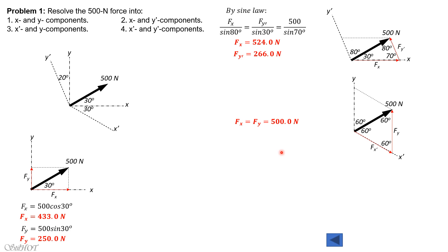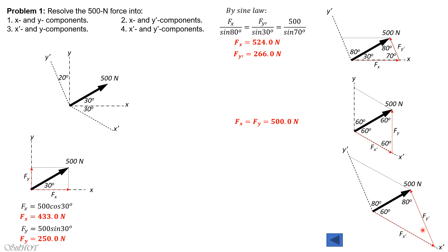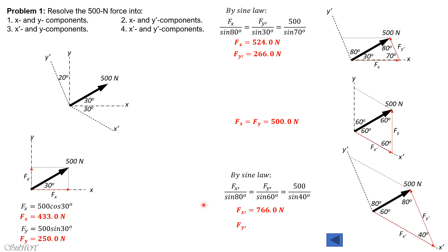So Fx prime equals Fy equals 500.0 newtons. Finally, for the x prime and y prime components, we form the parallelogram again. The angle measure is 60, this one is 80, and this is also 80 degrees. So 60 plus 80 is 140, meaning the remaining angle must be 40 degrees. By the sine rule: Fx prime over sin 80 equals Fy prime over sin 60 equals 500 over sin 40. Solving, Fx prime equals 766.0 newtons and Fy prime equals 673.6 newtons.